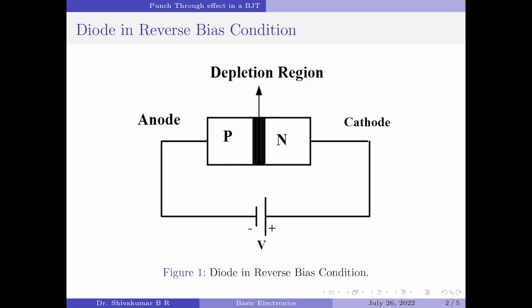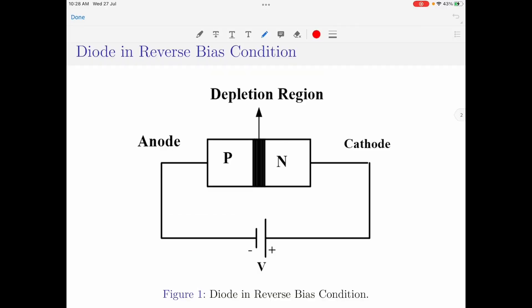Before I start the discussion on the punch-through effect, let us first consider a diode in the reverse biased condition as shown in figure 1. The anode of the diode is connected to the negative terminal of the input supply and the cathode is connected to the positive terminal, so the diode will be reverse biased. In one of my previous videos I have explained the working principle of a diode — that video is a prerequisite for this one, so I would highly recommend you watch it first. You can find the link in the top right corner or in the video description below.